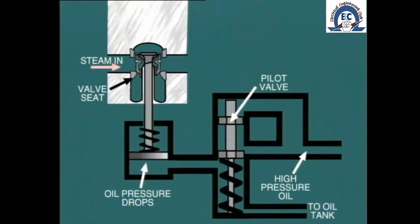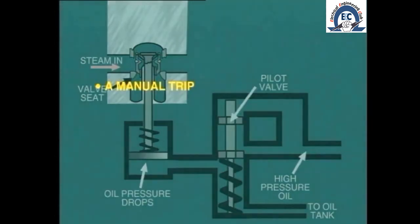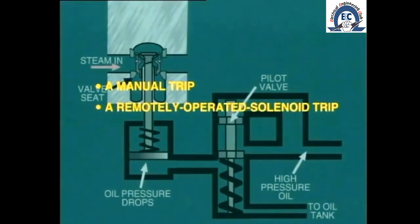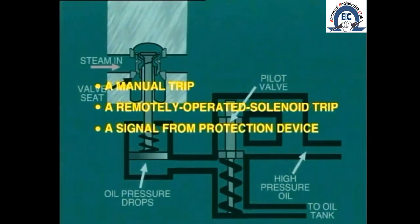As we'll see later, operation of the pilot valve, or trip valve as it is known, can be achieved by any one of several alternative means, including a manual trip, a remotely operated solenoid trip, or a trip signal from various protection devices.